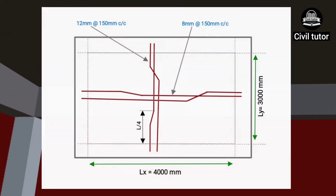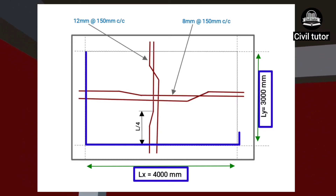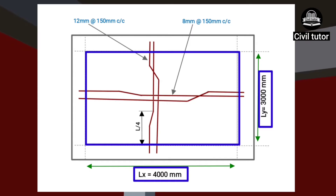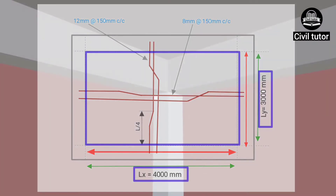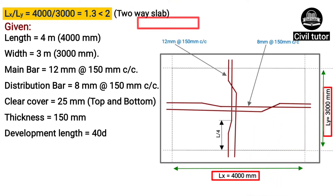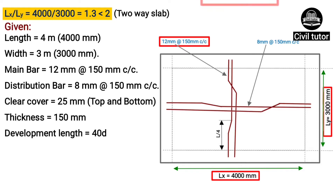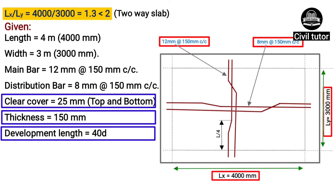Suppose we need to calculate the quantity of steel for a slab of length 4 meters and width 3 meters. The spans are considered excluding the width of the beam from all sides. LX is the longer span and LY the shorter span. The slab is provided with main bars of size 12 mm spaced at 150 mm center to center, and distribution bars of size 8 mm spaced at 150 mm center to center. The clear cover is 25 mm at top and bottom, the slab thickness is 150 mm, and development length equals 40d.